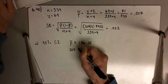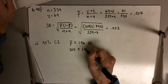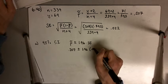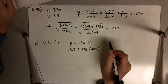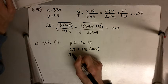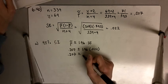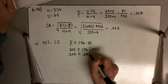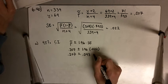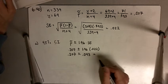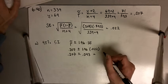we've got 0.207 plus or minus 1.96 times 0.022, and 1.96 times 0.022 equals 0.043. Let's round it off. And if you do 0.207 plus or minus 0.043,